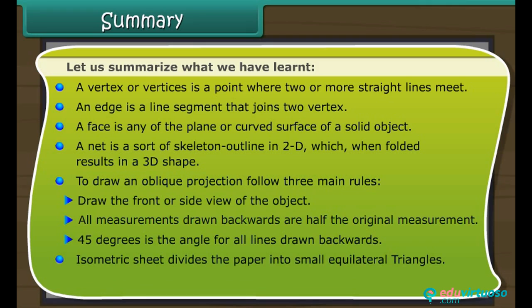Isometric sheet divides the paper into small equilateral triangles. Shadow play is a method to view three-dimensional objects into two dimensions.